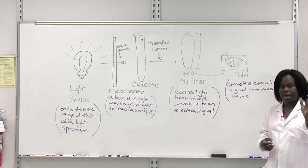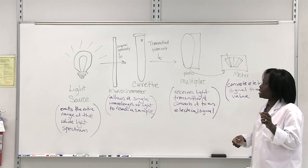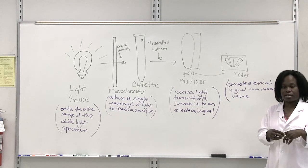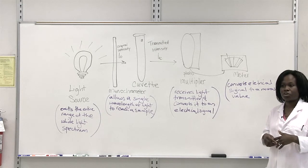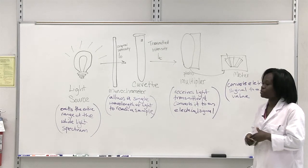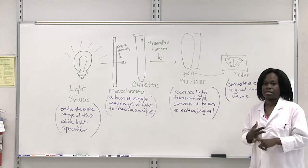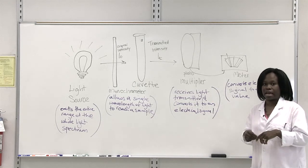So you have to use a blank and get the transmittance of that blank and then subtract that transmittance from what you would get for your dye itself. And then you would be able to get just the absorbance and the percentage transmittance of your dye alone.